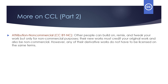The fourth type is Attribution Non-Commercial, also known as CC BY-NC. Other people can build on, remix, and tweak your work, but only for non-commercial purposes. Their new works must credit your original work and also be non-commercial. However, any of their derivative works do not have to be licensed on the same terms. In other words, they can only use your work non-commercially, they can't make money off it and they have to give you credit, but any derivatives they make can be licensed in any way they want.